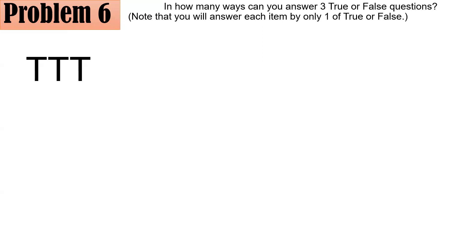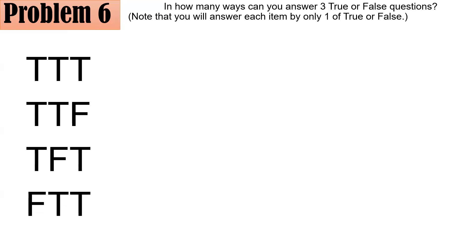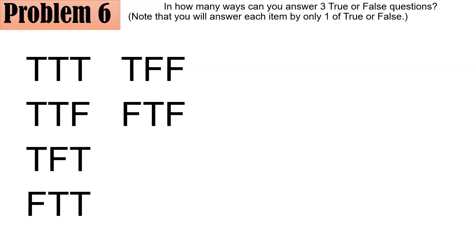It's possible to have all true, two true and one false — with arrangements TTF, TFT, or FTT — or one true and two false — TFF, FTF, or FFT — and lastly all false: FFF. That gives eight combinations in all. Apart from listing, there is another way using the fundamental counting principle.